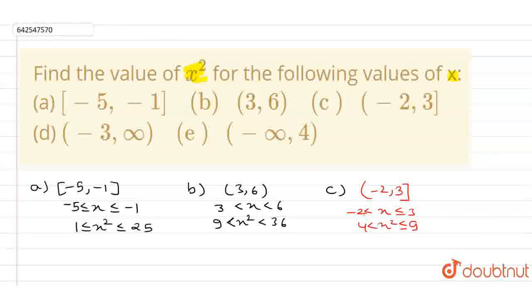Similarly, for d part, it is minus 3 to infinity. So here I can write x is less than infinity and greater than minus 3. On squaring it, I got x square is less than infinity and greater than 9.